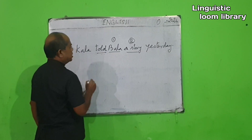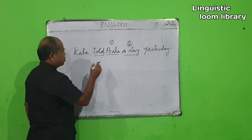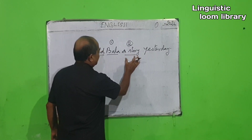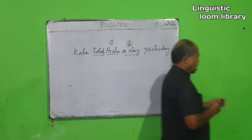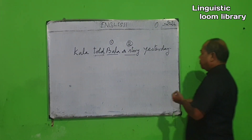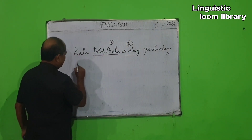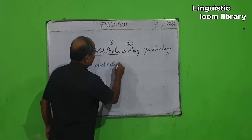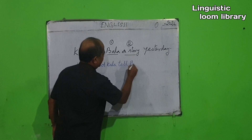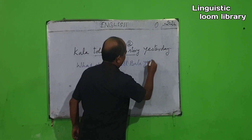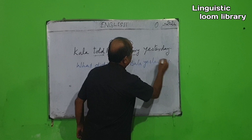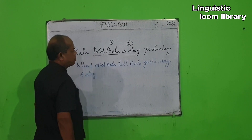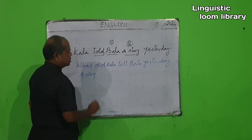Find out the finite verb in the given sentence — that is, 'told.' Among the question words whom, which, what, find out the suitable question word. The suitability should be made with the word that comes under number two after the verb — that is, 'story.' So we frame the question: What did Kala tell Bala yesterday? The answer is 'a story.' A story is the direct object.